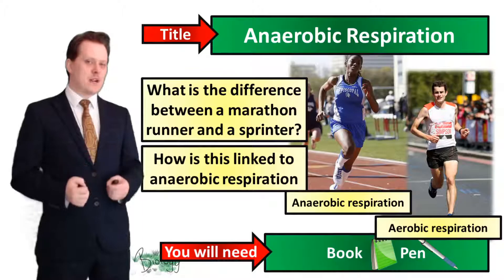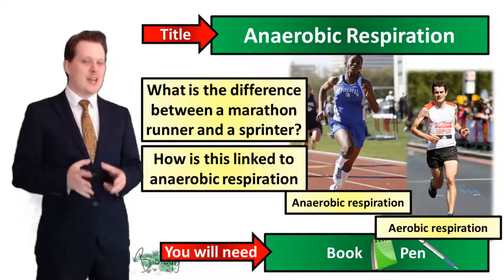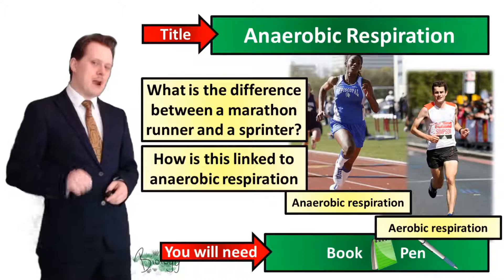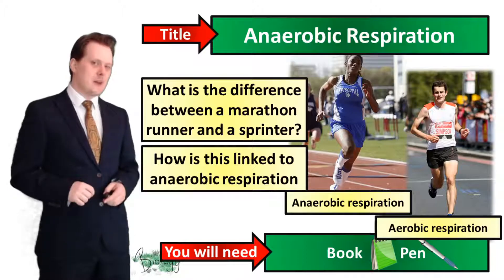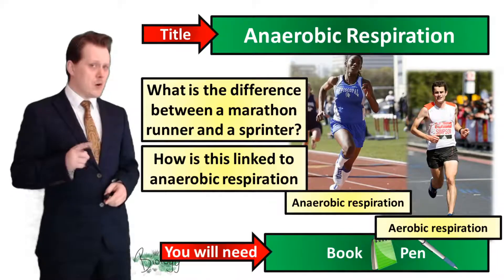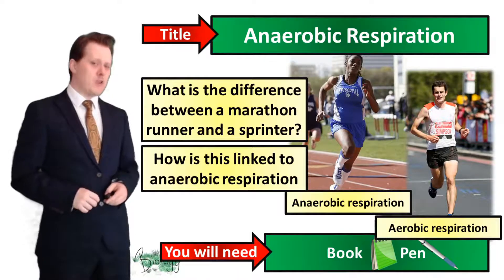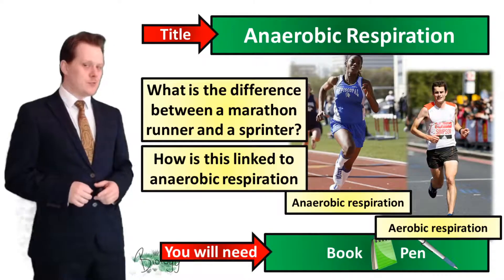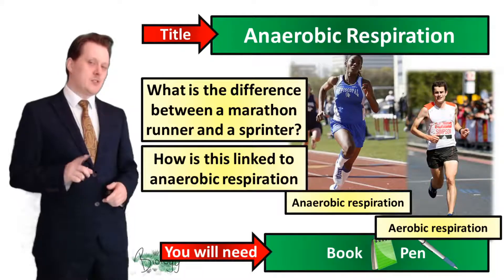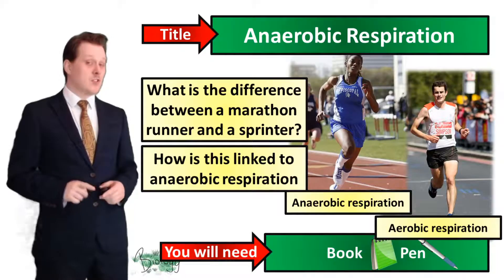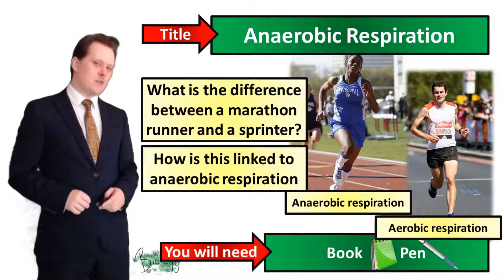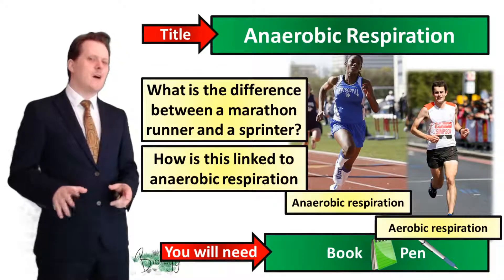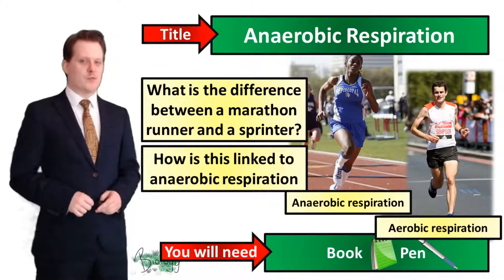And this is our anaerobic respiration. It is the breakdown of glucose in the absence of oxygen. Our marathon runner with their steady pace makes sure they've got a constant supply of oxygen for aerobic respiration, whereas our sprinter uses all the oxygen available to them in a short period of time, to the point where they have to start breaking down glucose without oxygen.